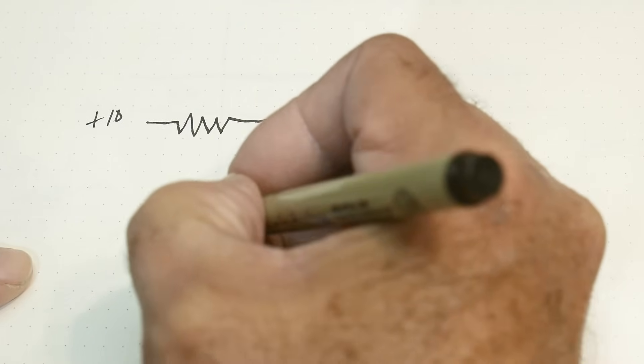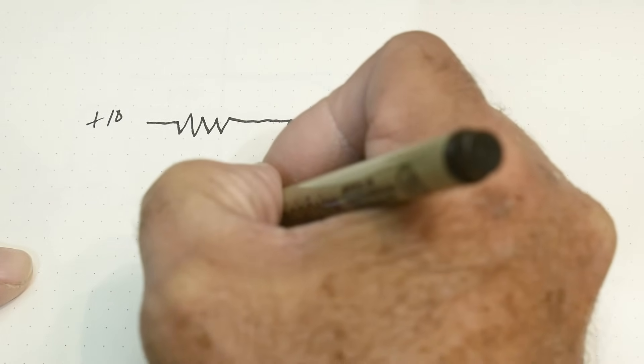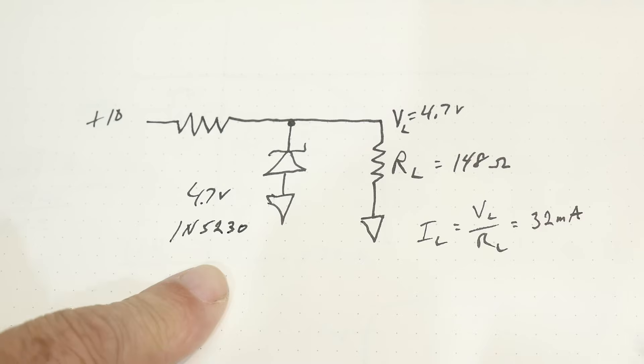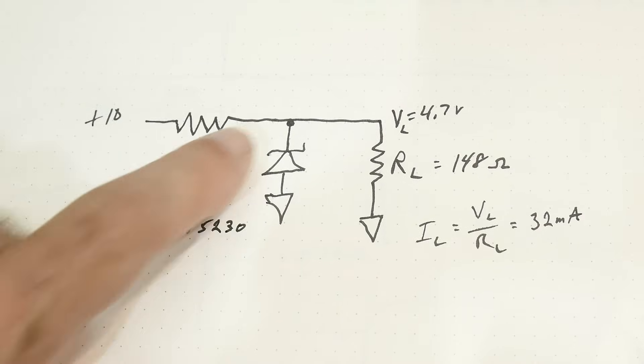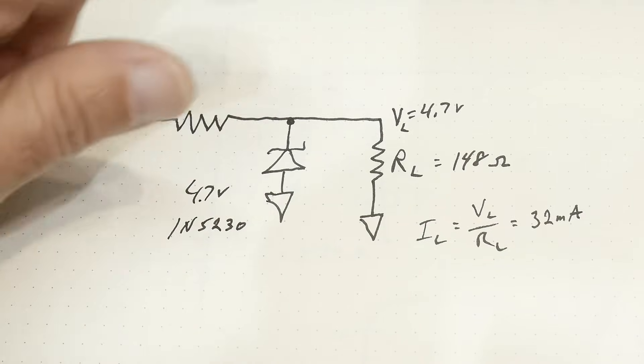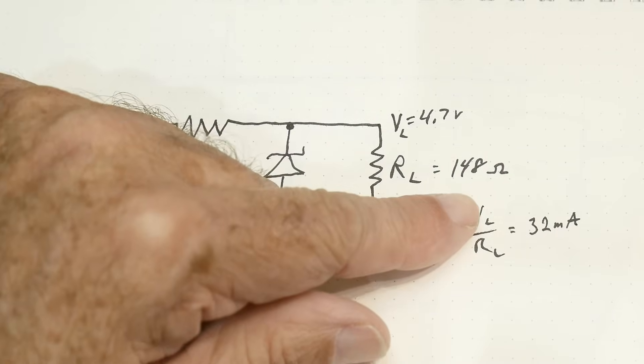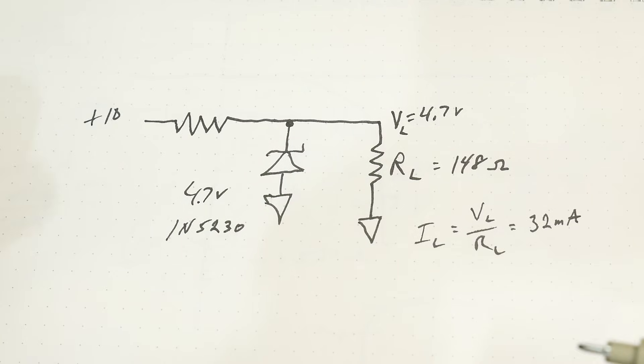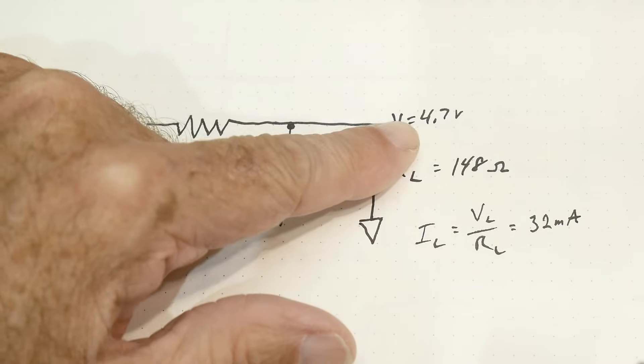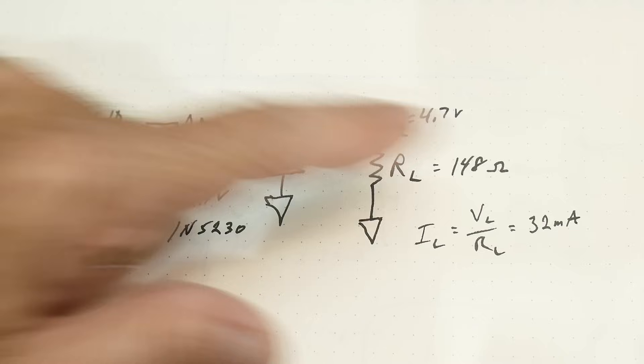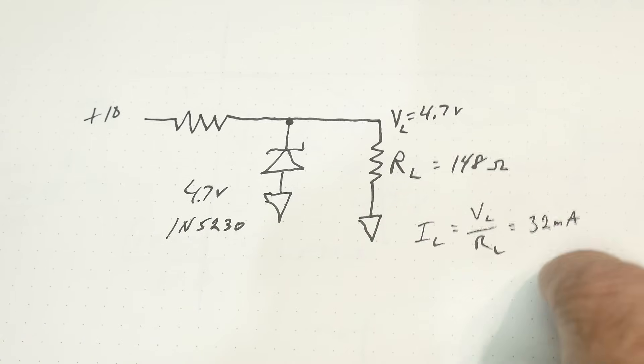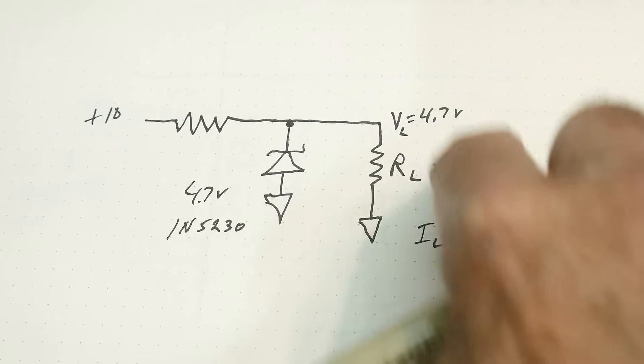We've chosen the 1N5230. And that will give us 4.7 volts. And the load that we're going to be having is 148 ohms. And so if we have 4.7 volts and 148 ohms, we can use Ohm's law. We have about 32 milliamps in our circuit.